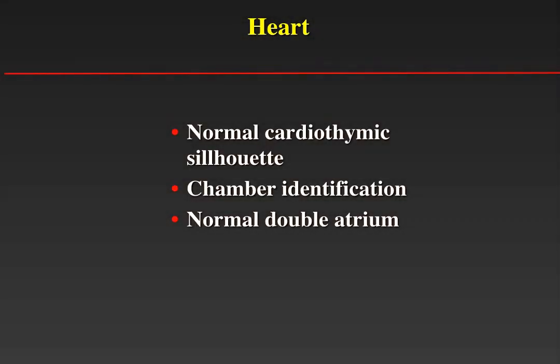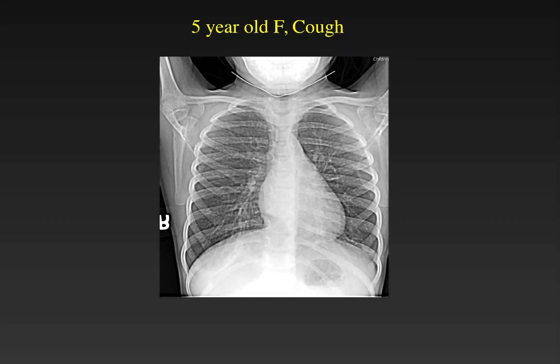When looking at the heart, we have to describe the heart shadow as a cardiothymic silhouette, especially in young children because the thymus can reach all the way down to the diaphragm. It is very difficult to describe specific chamber enlargement in young children because the heart is relatively large in proportion to the chest, and one chamber's enlargement can displace others. In this five-year-old, the left atrium appears as a rounded radio-density behind the heart. In adults this indicates left atrial enlargement, but in children it is an entirely normal appearance.